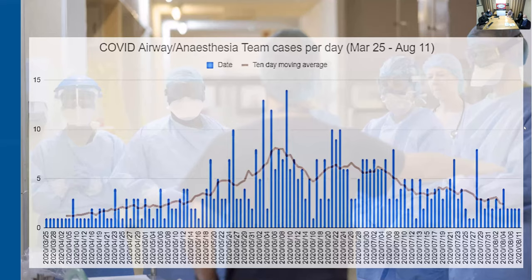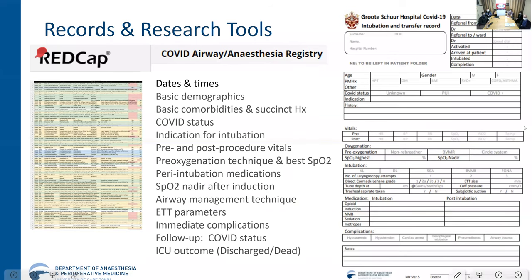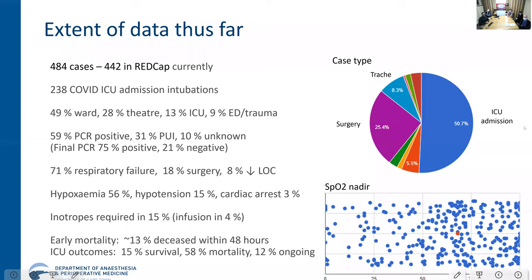We've taken over the trauma complex and are using the trauma theaters as a dedicated COVID theater area, which allows us to direct non-COVID patients into our main theaters and COVID patients into the trauma theaters. We collect a fair amount of data on patients, which has allowed us to improve our practices over time. This initially goes onto a paper CRF, then is captured into a REDCap database. Our COVID anesthesia and airway team has done just shy of 500 cases, with full data for 442 in the registry, including 238 intubations of COVID or PUI patients for ICU admission.